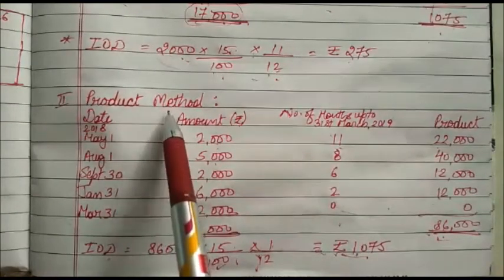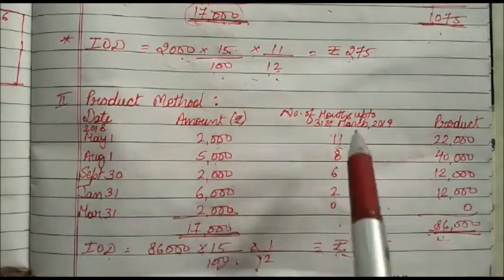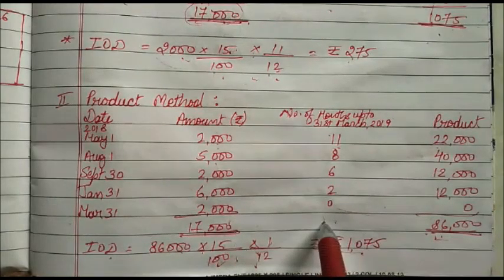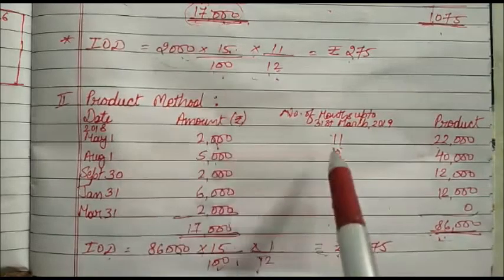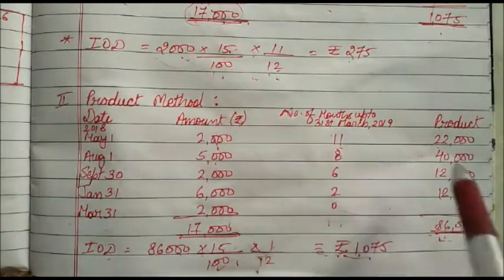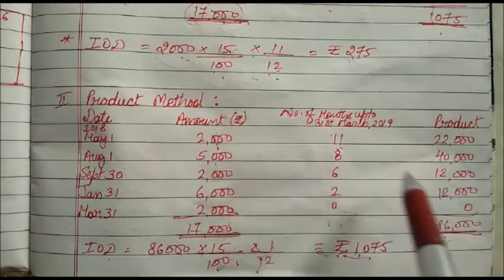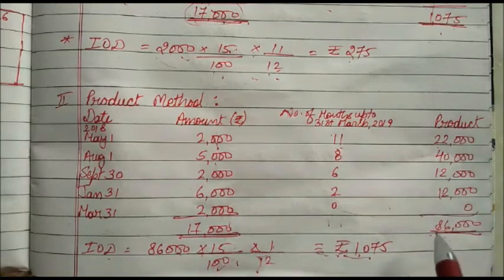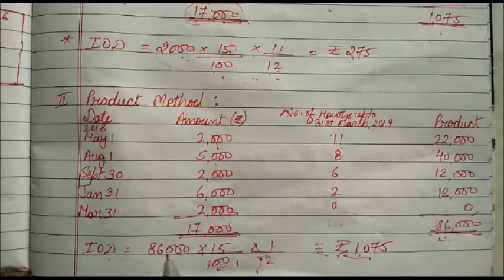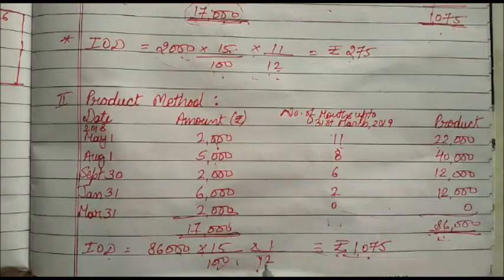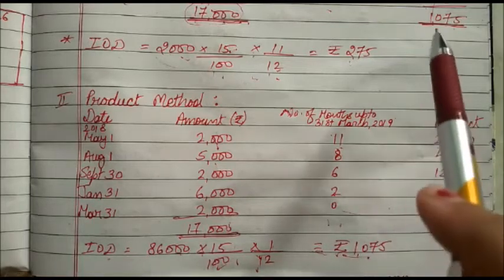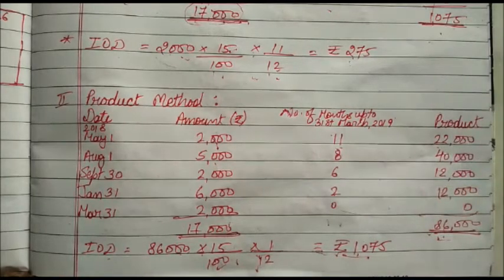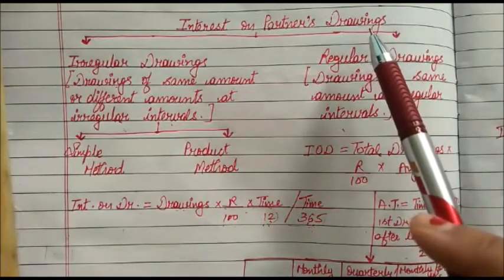For the product method we use the same example — same dates, amounts, and months remaining. We multiply each amount by the number of months: ₹2,000 × 11 = 22,000; ₹5,000 × 8 = 40,000; and so on, giving a total product of 86,000. We then apply the formula: 86,000 × 15% × 1/12, and we get the same total interest of ₹1,075 as obtained by the simple method.